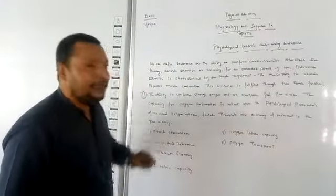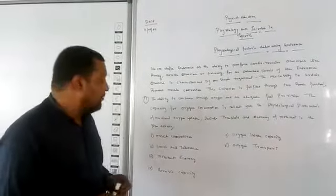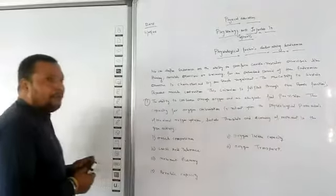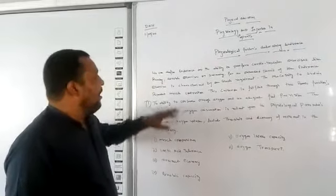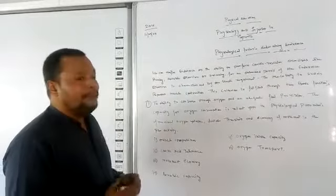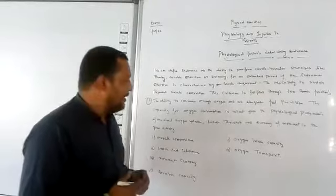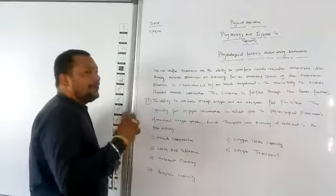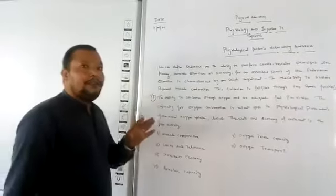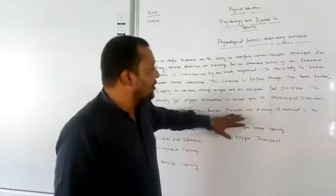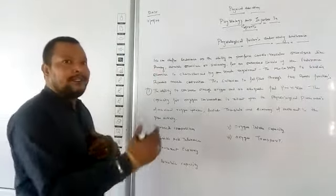Number one is maximum oxygen uptake, also known as VO2 max. Number two is lactate threshold. Lactate threshold refers to when the body enters into longer physical activity, after some time the amount of lactic acid increases in the body, and due to that increase, the contraction ability of muscles decreases. In such a situation the body cannot continue with longer duration exercises. But lactate threshold is the ability of the human body to continue with exercises even in the presence of lactic acid.